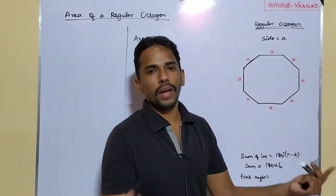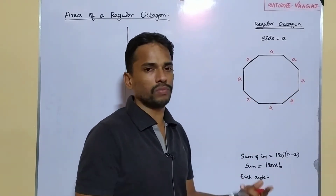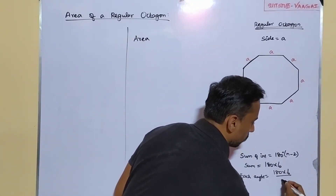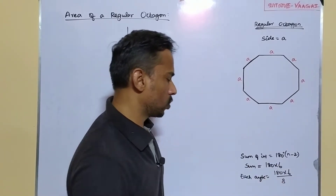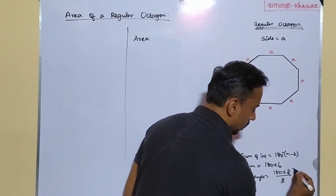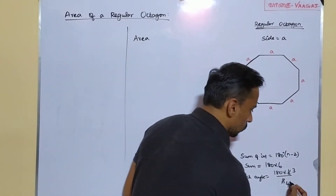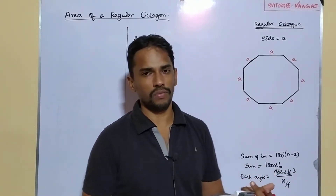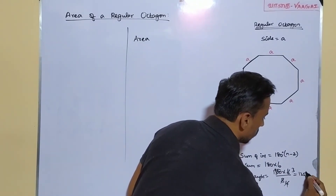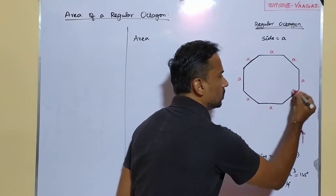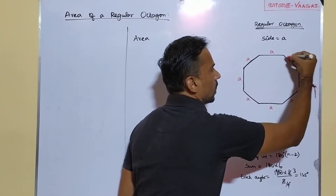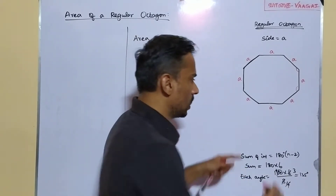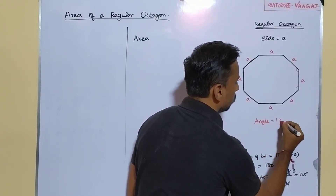Each angle = (180 × 6) / 8. Simplifying 6/8 to 3/4 gives us 180 × 3/4 = 45 × 3 = 135 degrees. So each of the eight interior angles of this regular octagon is exactly 135 degrees. Let us note: each interior angle = 135°.